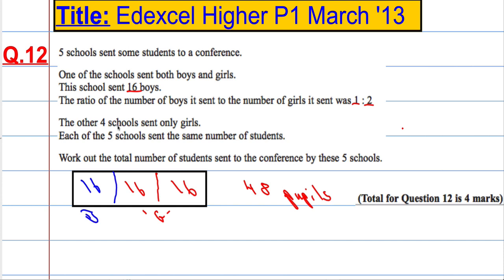It says the other four schools sent only girls, and each of the five schools sent the same number of students. That means each school must have sent 48 pupils.